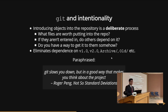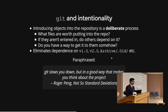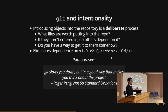Git embodies this idea of intentionality — entering objects into the repository is a very deliberate process. You could just 'git add dot' to add everything, but if you're actually going through and adding things one at a time, you have to confront which files are worth including in the repository. If you don't include them, do other people or your future self depend on those files? Do you have a way to get those files to the people who need them? You have to think about that for the project to be reproducible.